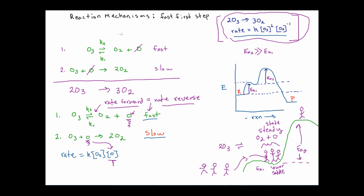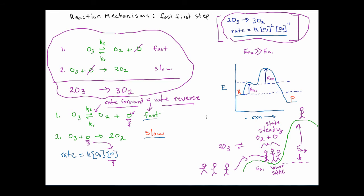Coming back to our original diagram, you can see that the rate law we derived from the elementary steps does in fact equal the experimental rate law. So this set of elementary steps is a valid proposal. Remember that the chemist would have to go in and actually develop experiments to determine whether or not the hypothesis was true. I'd like to thank the viewer for taking the time to watch. You can find more videos at www.chemdoctor.org. Thanks again for watching.